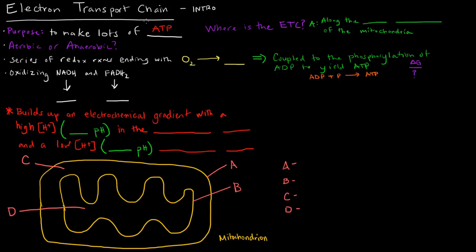The reason the electron transport chain is called a chain is that it's a series of redox reactions ending with taking oxygen and actually turning it into water. So if we're taking oxygen to water, we're adding some hydrogens, lowering the number of bonds to oxygen — we're actually reducing oxygen to water. And because the series of redox reactions ends with oxygen being turned into water, this is considered an aerobic process, because oxygen is actually required in this chain of redox reactions.